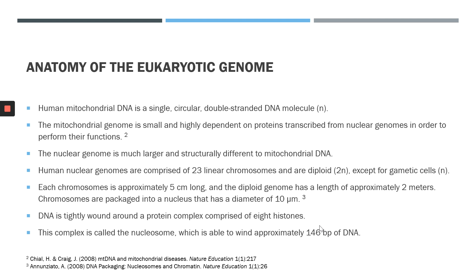This 2 m length of DNA has to package itself into a nucleus which has a diameter of just 10 micrometres. In order to achieve this, eukaryotic DNA is tightly wound around a protein complex comprised of 8 histones. This complex is called the nucleosome, which is able to wind approximately 146 base pairs of DNA.